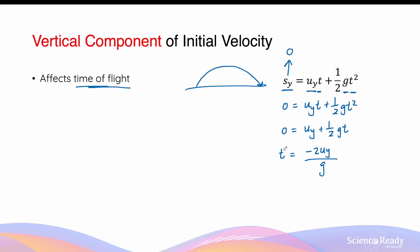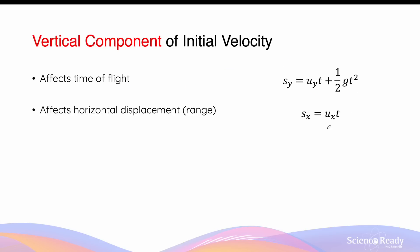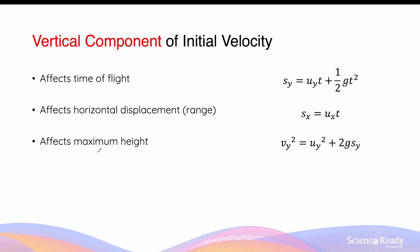The time of flight is directly proportional to the vertical component of initial velocity. If we double uy, the time of flight increases by a factor of two; if we half uy, the time is also halved. The range depends not only on ux but also on time, so changing the vertical component — which changes time of flight — also affects the range. If time of flight increases, range increases; if time decreases, range decreases.